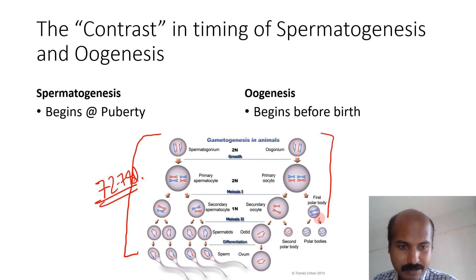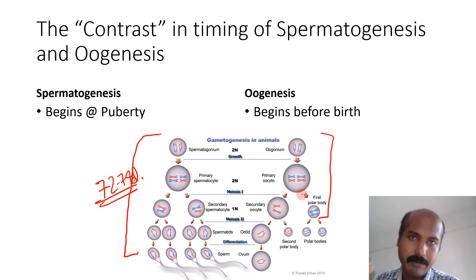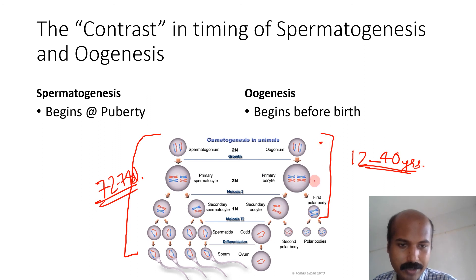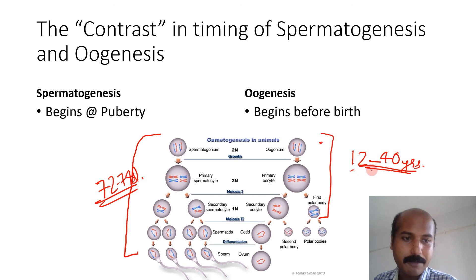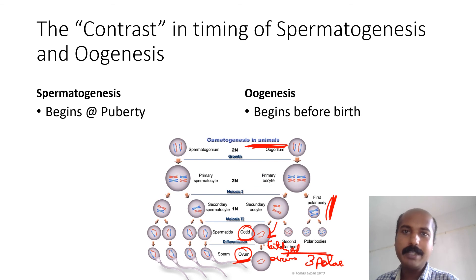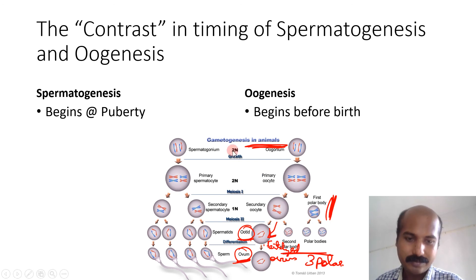If we consider the first ovulation in a female, the time from oogenesis beginning (formation of primary oocytes before birth) to the release of the first meiotic arrest at first ovulation spans approximately 12 to 40 years — covering the entire reproductive age range. So spermatogenesis takes about 70 days, while oogenesis spans 12 to 40 years. Understanding oogenesis fully requires also learning about ovarian follicles, which will be covered in the next video.